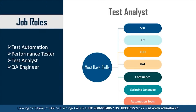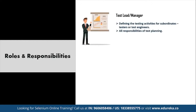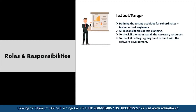Now that you know the different job profiles, let's look at the roles and responsibilities of a testing automation engineer. In software testing, every company defines its own level of hierarchy, roles, and responsibilities. On a broader level, there are two levels in a software testing team. The first is the test lead or manager. A test lead is responsible for defining the testing activities for subordinates — testers or test engineers — all responsibilities of test planning, checking if the team has the necessary resources, checking if testing is going hand-in-hand with software development, preparing status reports, interacting with customers, and updating the project manager regularly.